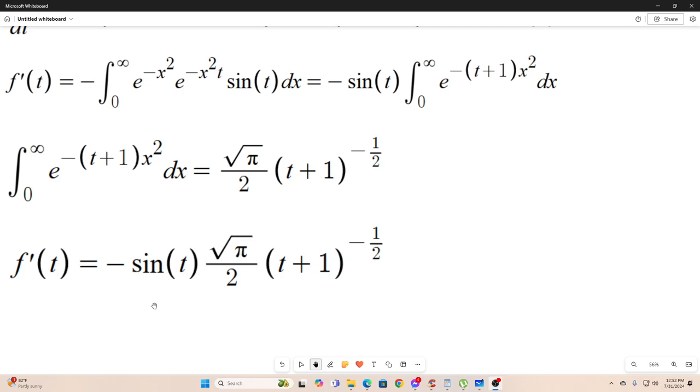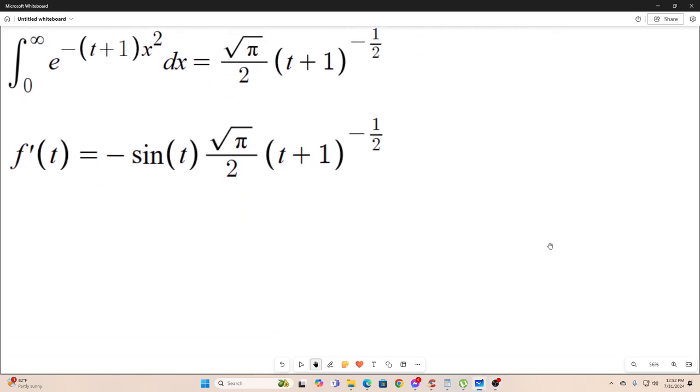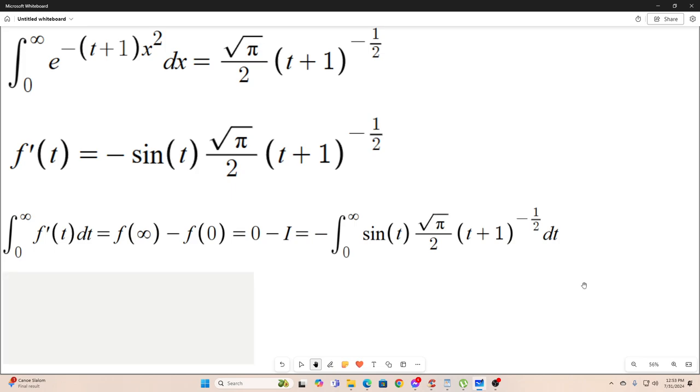All right, so we have f prime of t is equal to this. Now, we will use the fundamental theorem of calculus part two on f prime of t, and we will integrate it from zero to infinity. That means this is going to be equal to the antiderivative of f prime, which is just f evaluated at the upper bound. That's f of infinity, minus the antiderivative of f prime, which, again, is f evaluated at the point zero. Well, we already know what those are. We determined that earlier. f at infinity is zero, and f at zero is i. So that equals zero minus i. And that, in turn, is equal to the integral from zero to infinity, because don't forget, that's what we did. We're integrating both sides of this from zero to infinity with respect to t. So we end up with this, which simplifies to this. So i is equal to the square root of pi over two times the integral from zero to infinity of sine t over the square root of t plus one.